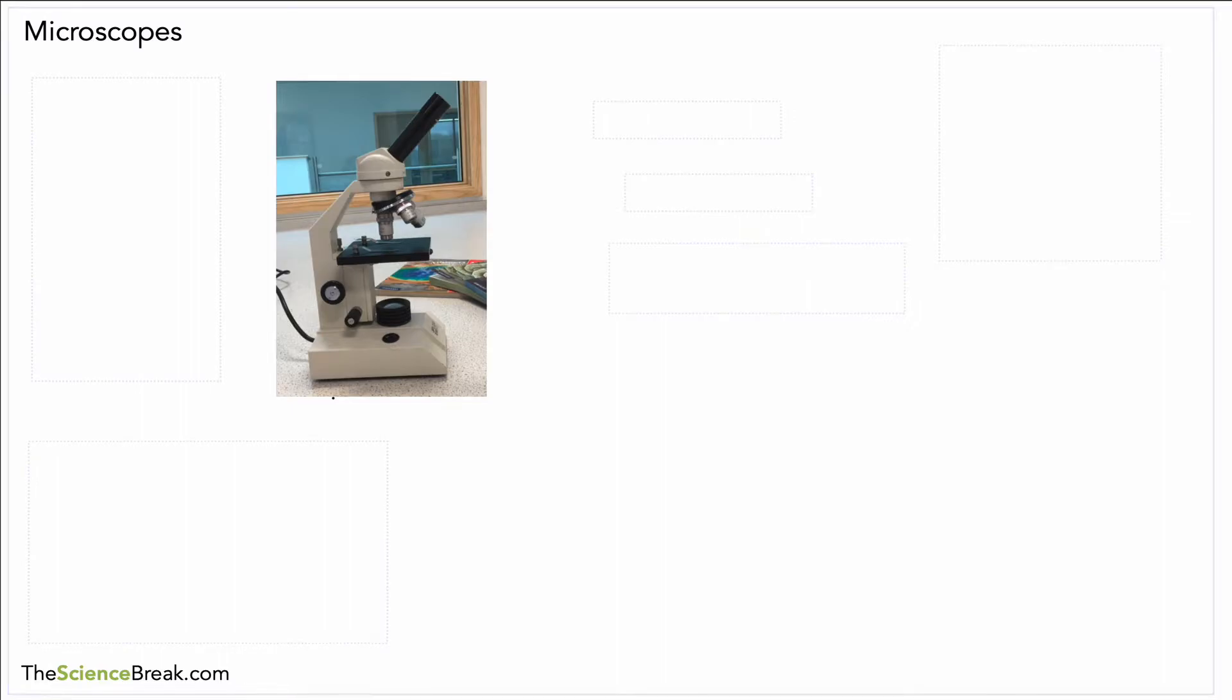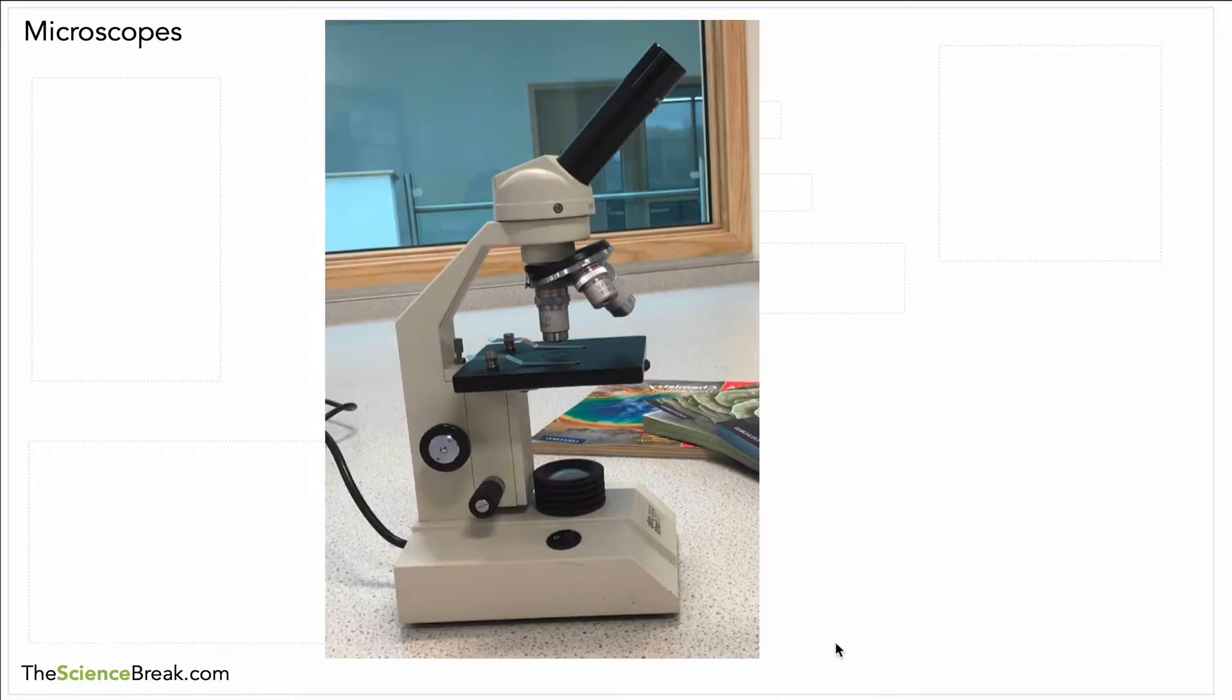Hello, this is our second video for Key Stage 3 biology and science. We're looking at microscopes. We have a photograph of a microscope on the screen there. I'm sure you've seen one of these in school, and we're going to take a look at the different parts, how to set one up.